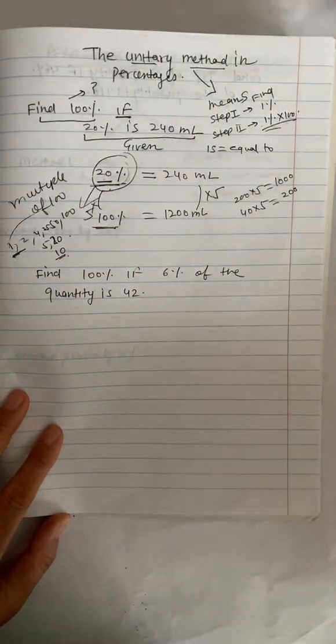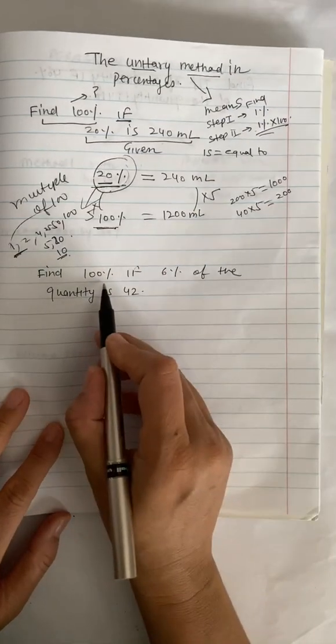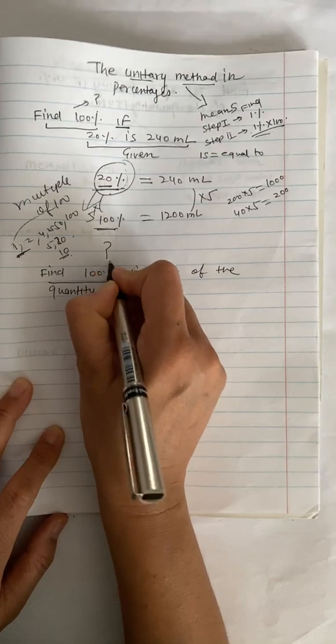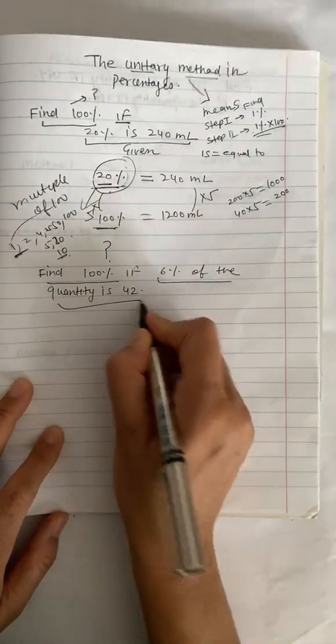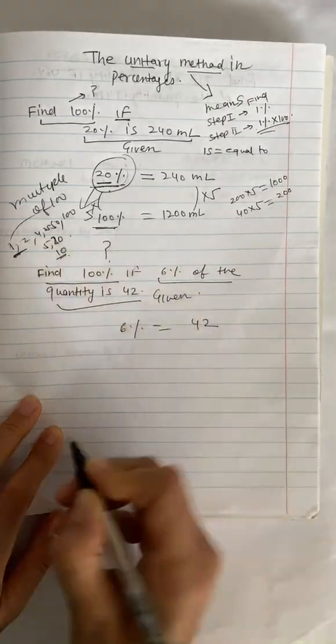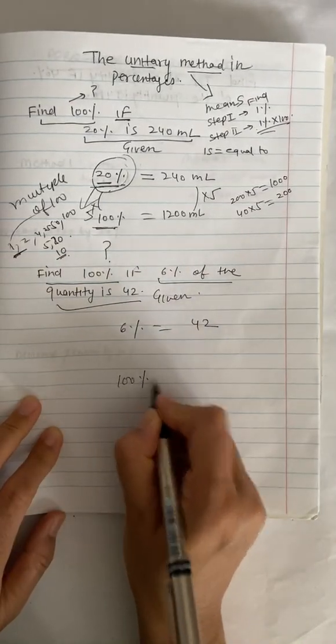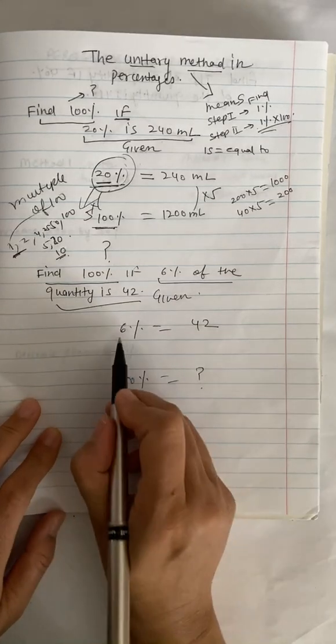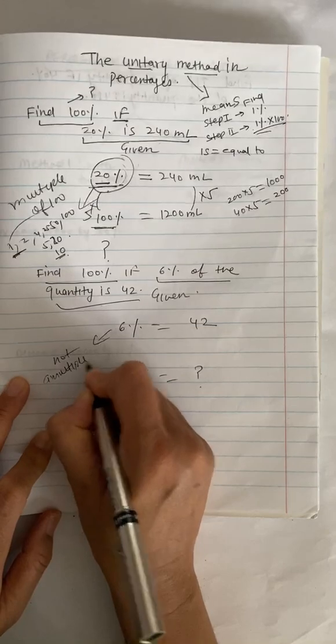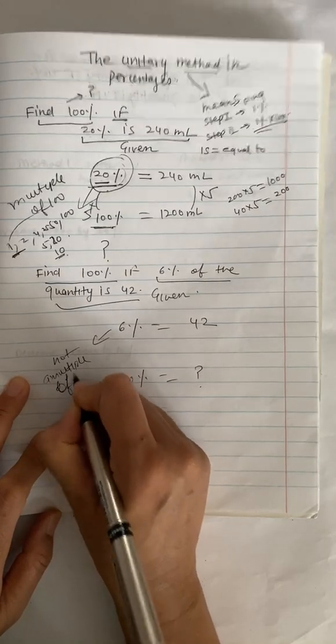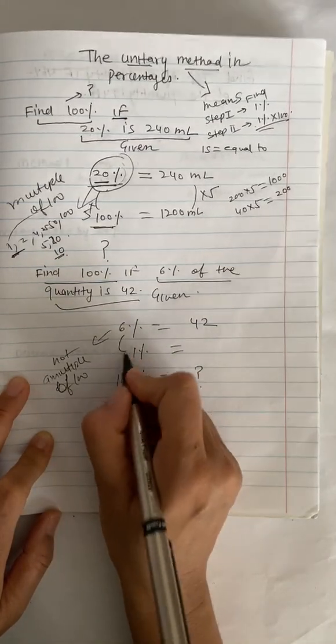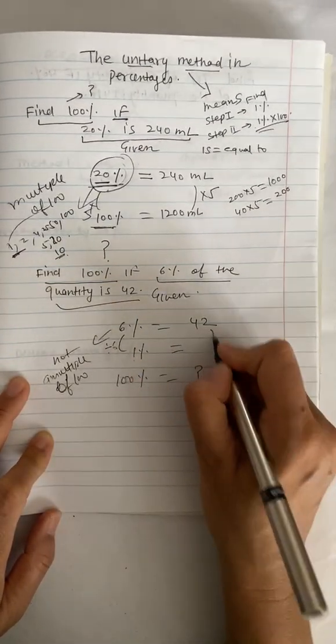Now, I'm going to move to the next example, where we have to find 100% if 6% of the quantity is 42. This is what we have to find out, and this is our given information. 6% is equal to 42, and now I have to find 100%. To do that, 6 is not a multiple of 100, which means I have to find 1% first.